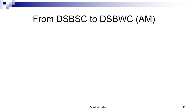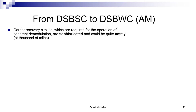From double sideband suppress carrier to double sideband with carrier — what is the motive? Why do we add the carrier? Carrier recovery: we have seen that receiving double sideband suppress carrier signal requires a coherent detector, requires multiplication by cosine with the same phase. We had to multiply by cosine at omega CT, and this should have the same frequency as the incoming carrier. Carrier recovery circuits, which are required for this operation — coherent demodulation — are relatively sophisticated and costly. The signal will be noisy at long distances, and getting the carrier from it is not an easy job.